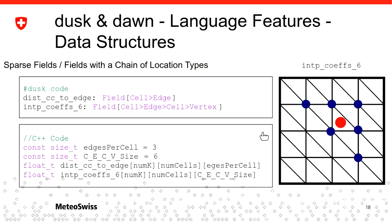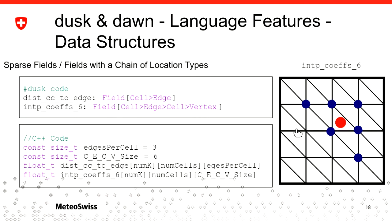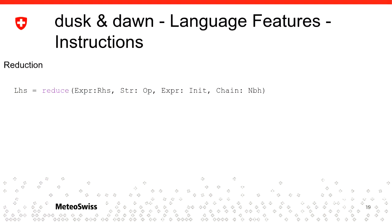A slightly more complicated example is interpolation coefficient fields. This is again a sparse field, but here you're not looking at direct neighbors. We want to select these six vertices which are neighbors of a cell in red. What we say is: starting from the initial cell, you look at the neighboring edges, from there at neighboring cells, and from there collect all adjacent vertices. This set we call a neighborhood. Basically it states: for each cell, store six values — one for each vertex selected through this syntax.